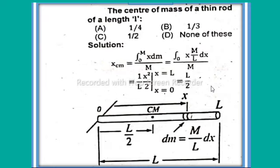The solution: x_cm equals integral from 0 to M of x dm divided by M, which equals integral from 0 to L of x times M/L dx divided by M. This simplifies to 1/L times x squared over 2, evaluated from 0 to L, which equals L/2. So the answer is 1/2.